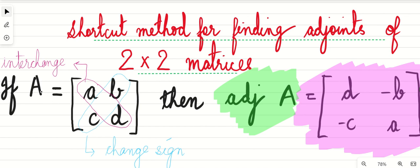Let's take an example. If A is a matrix and this is the matrix given, then the adjoint of A can easily be found. How do we do it? See here, the first element is a, and the element which is diagonal to a is d.